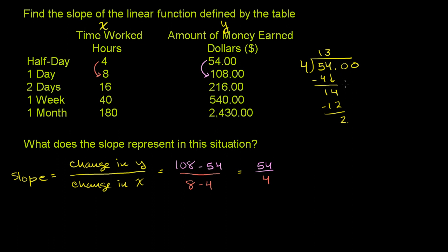Bring down a 0 right here. 4 goes into 20 five times. And of course, you had this decimal right here. 5 times 4 is 20. Subtract. No remainder. So this is equal to 13.5.